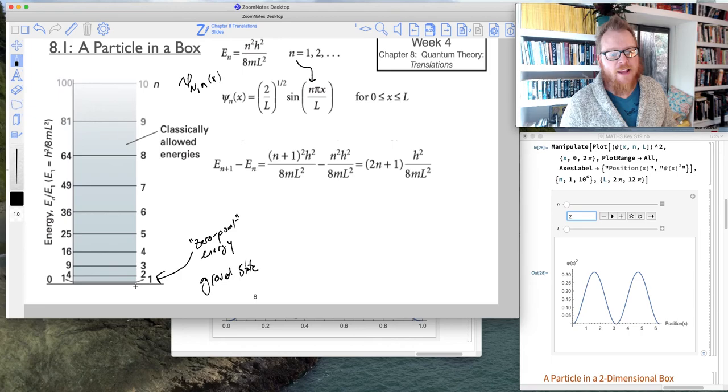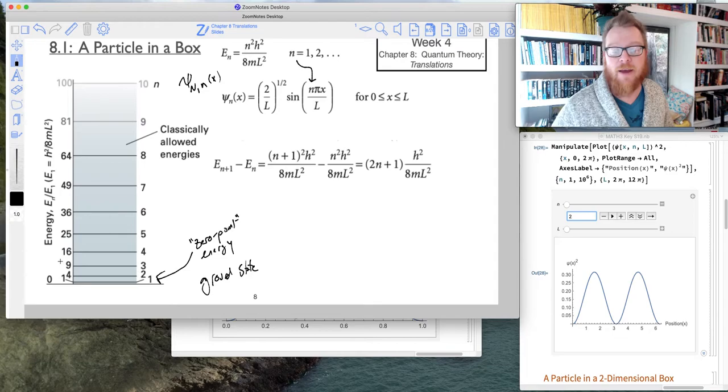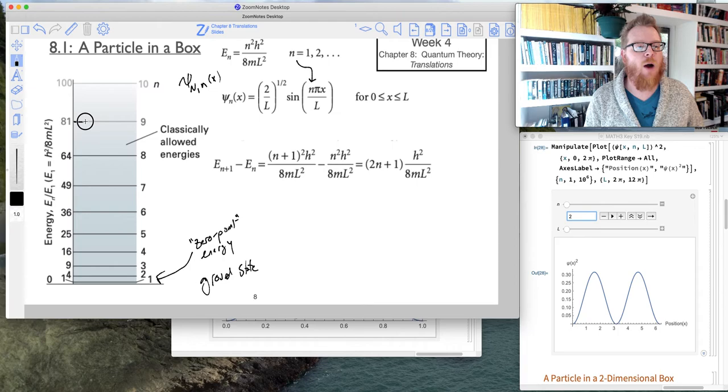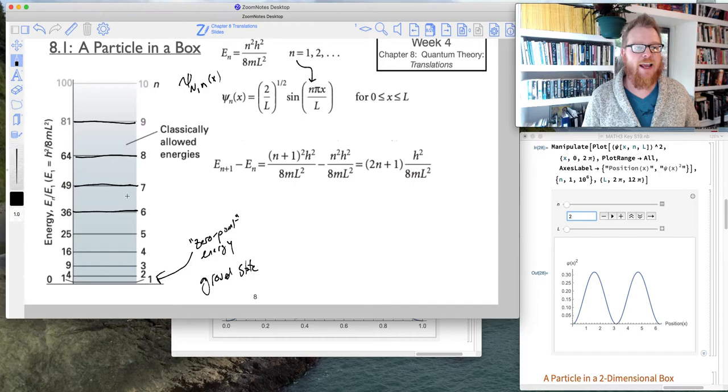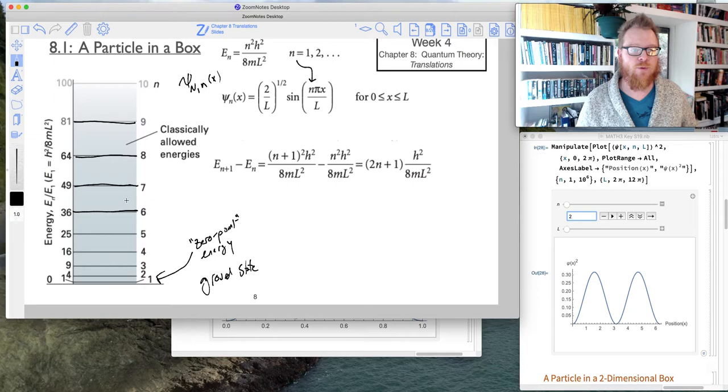So when n becomes 2, that goes up by the square. So it goes up to 4. And then when n equals 3, it goes up by 9. And then when it goes up to 4, it goes up by 16. It keeps going up by the square. Now, each of these levels become our quantized energy levels. And this creates the basis of what we know about quantum mechanics, of energy only existing in these unique quantized values.